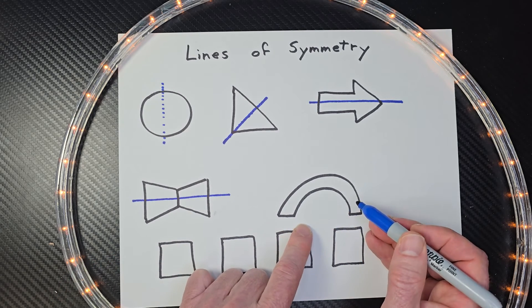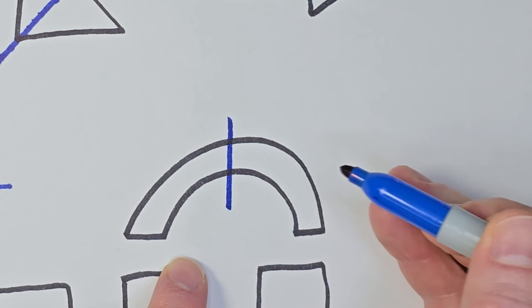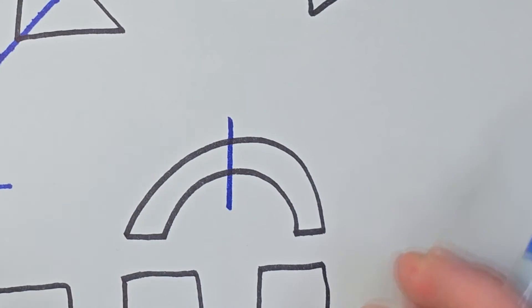Here we have this rainbow here. And I divide that shape right in the middle. Okay. All right.